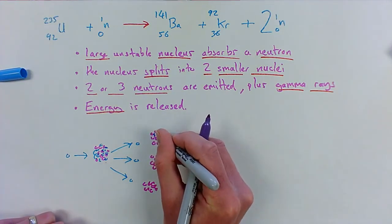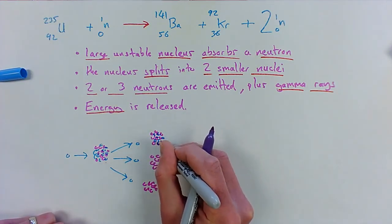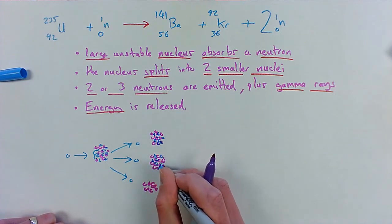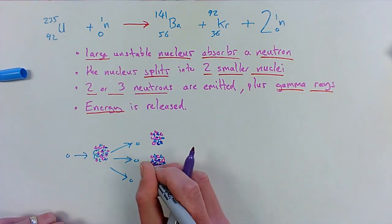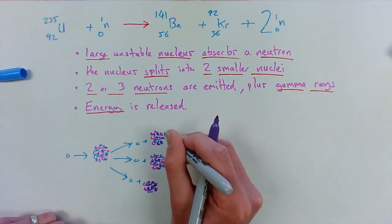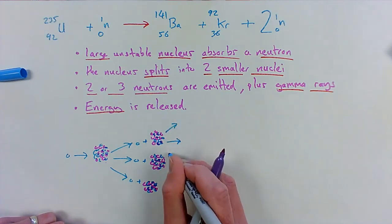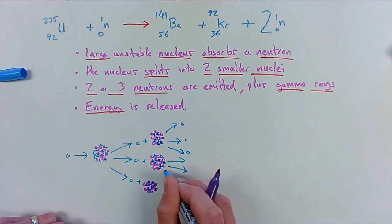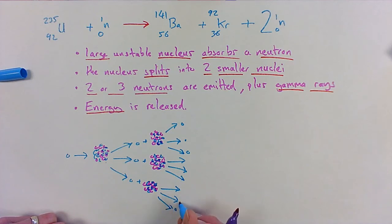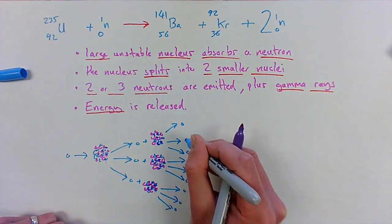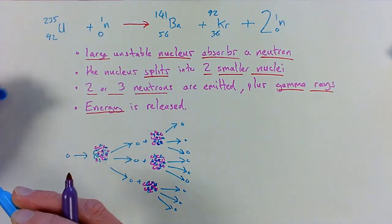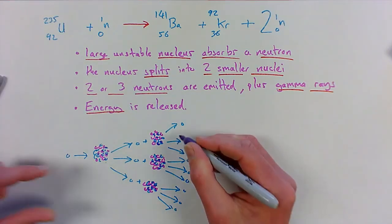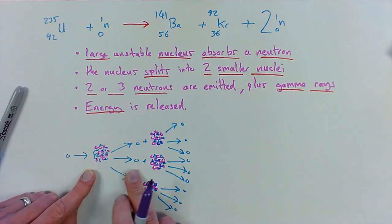If each of those large unstable nuclei each go on to perform fission, then they each may release two or three more neutrons. And if there are more of these uranium nuclei present, then each of those would go on to release more. It doesn't take long before we have what we call a chain reaction happening. Remember, each of these is releasing a lot of energy - energy is released each time.